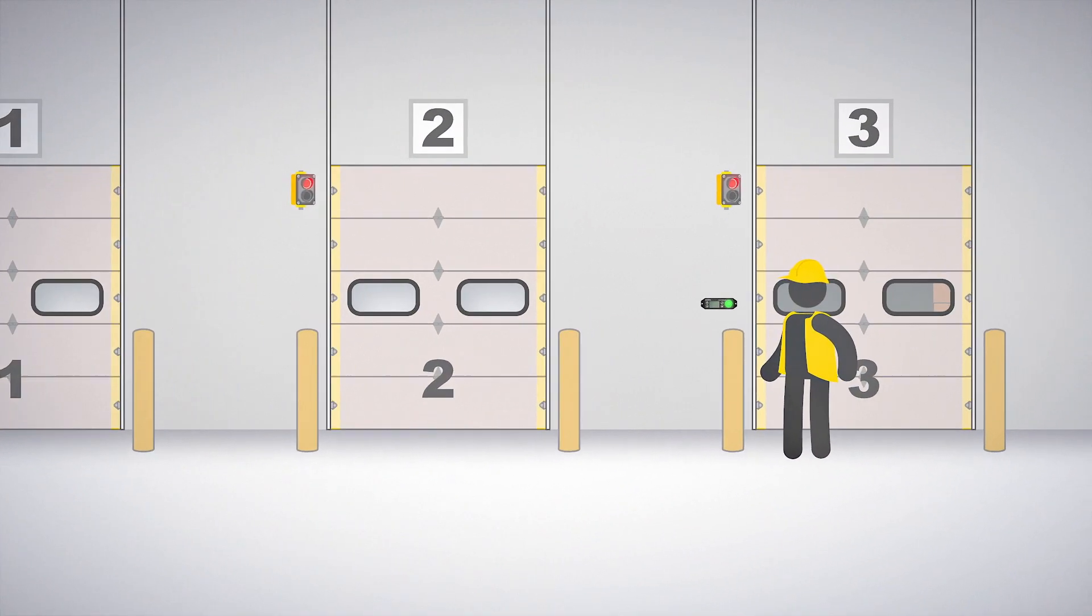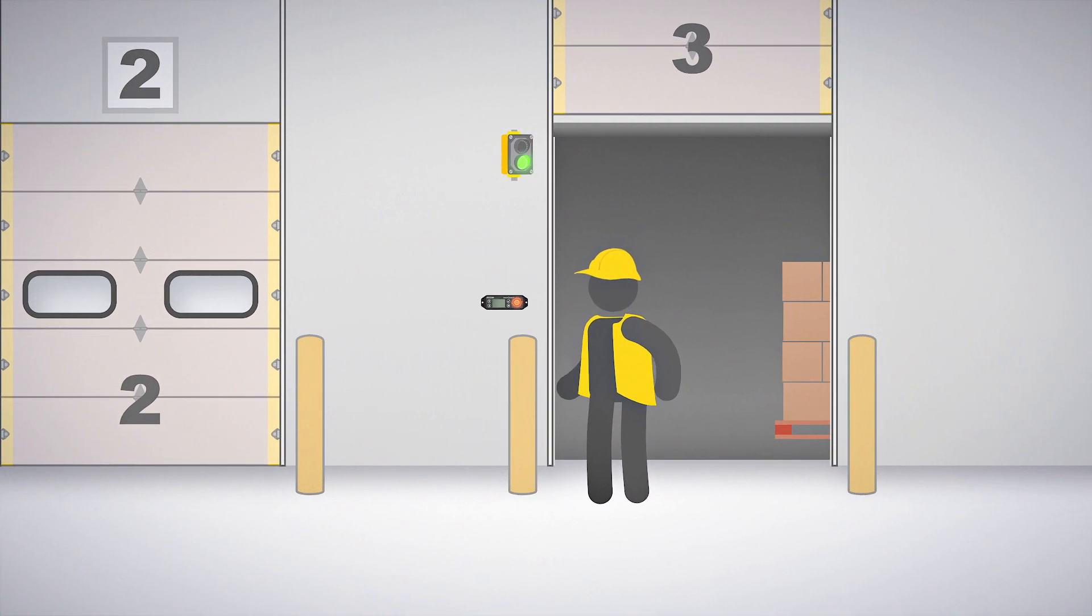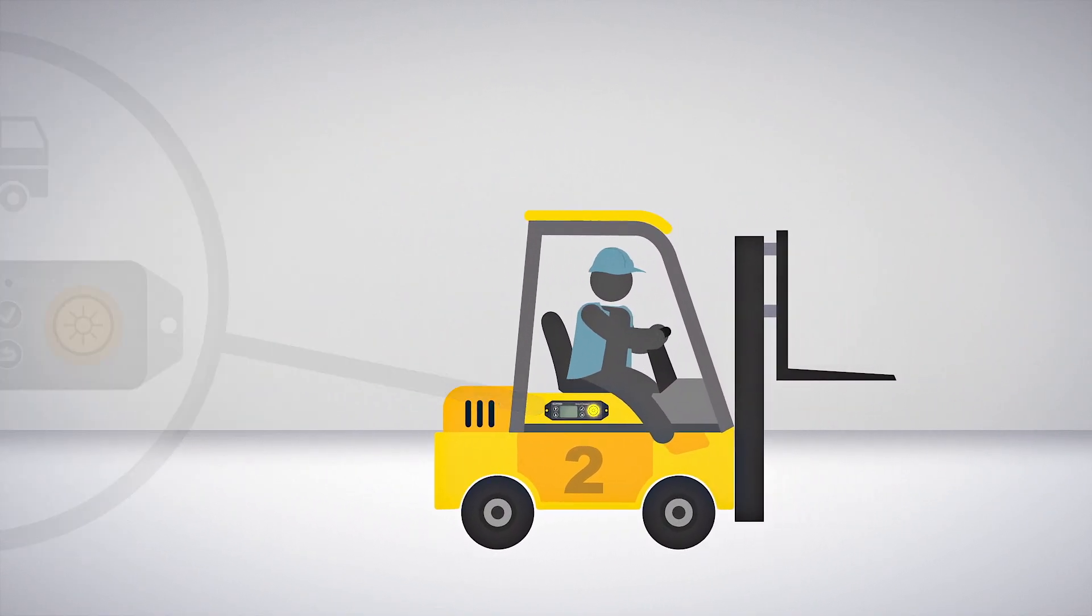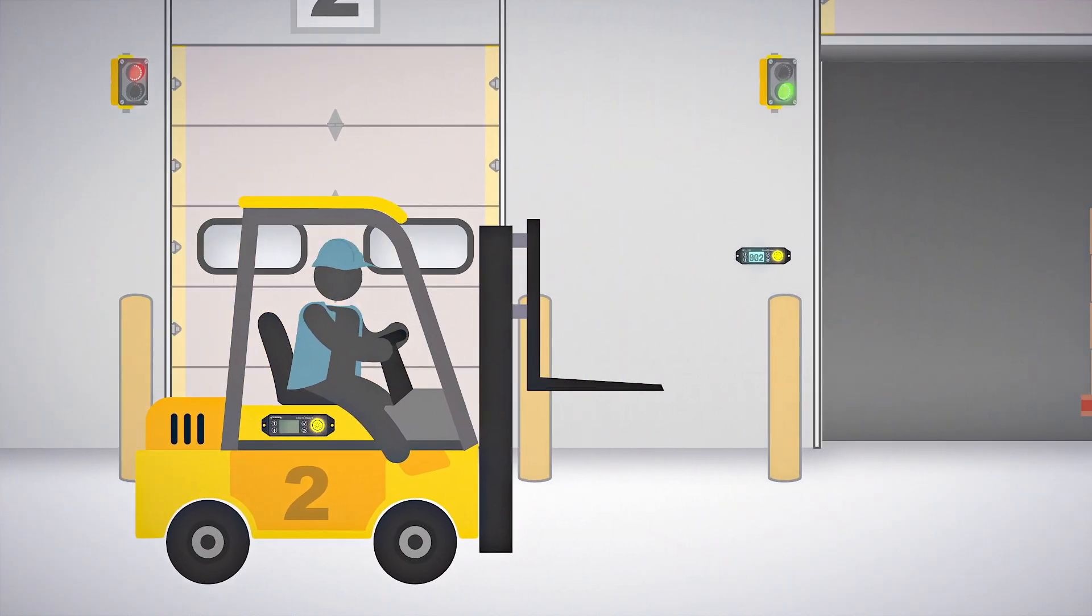DirectSelect nodes make ideal communication devices between dock bay doors and forklifts. Send and receive requests and responses between team members without workers ever leaving their stations.